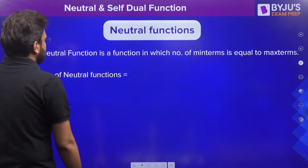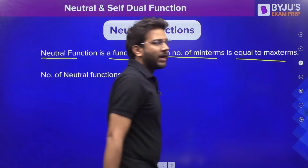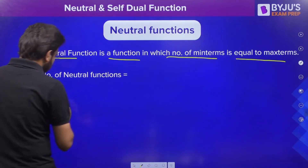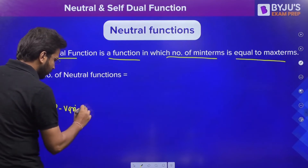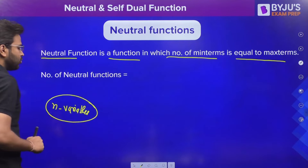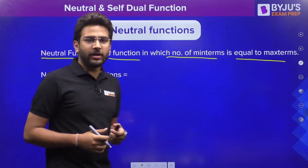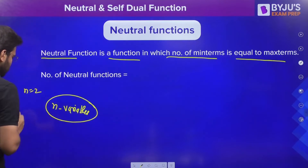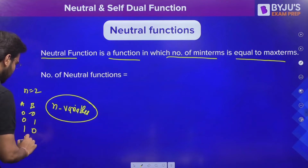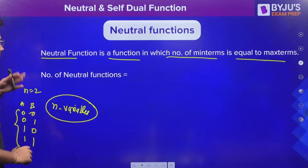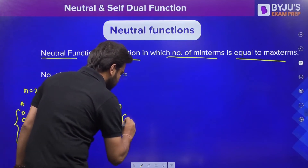So what are neutral functions? A neutral function is a function in which the number of min terms is equal to the number of max terms. Now if you have n boolean variables, how many combinations are possible? 2 raised to the power n. For example, if n equals 2, with variables a and b, we can have 0,0 — 0,1 — 1,0 — 1,1, that means 2 raised to the power n combinations are possible.